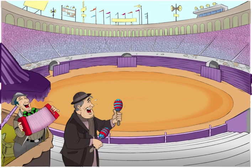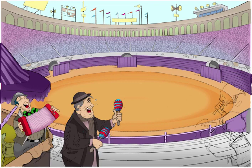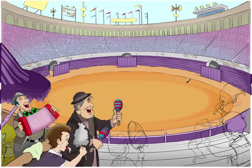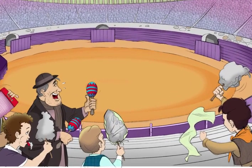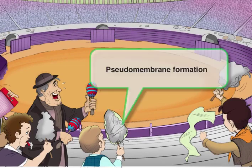This is very similar to the pseudomembranes formed by C. diff in the colon. We'll help you remember this by drawing kids in the stands eating gray cotton candy wrapped in plastic wrap — this grayish cotton candy with plastic wrap will remind you of the pseudomembrane formation.